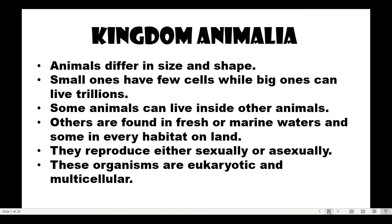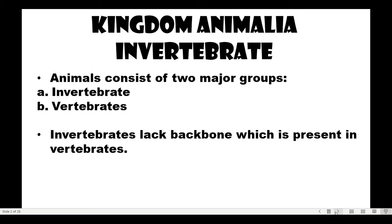Kingdom Animalia — the animals here differ in size and shape. Small ones have few cells, while big ones can have billions of cells. Some animals can live inside other animals. Others are found in fresh or marine waters, and some in every habitat on land. They reproduce either sexually or asexually. These organisms are eukaryotic and multicellular. Now let us discuss first the invertebrates of Kingdom Animalia.